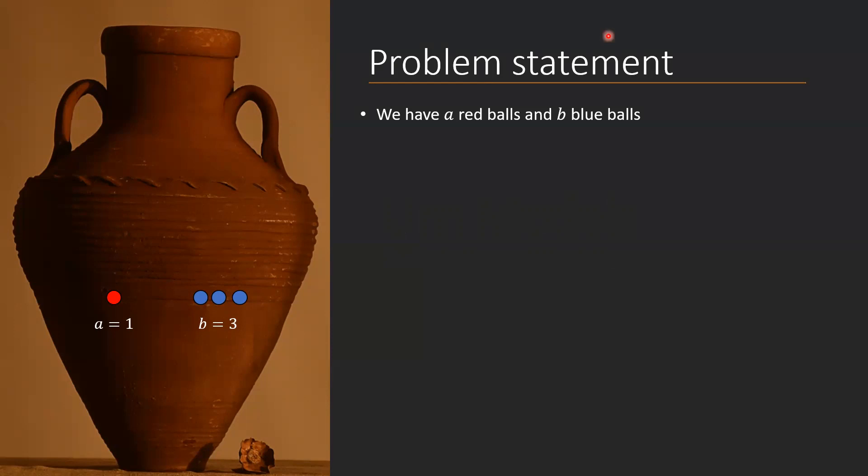For the sake of this video, we consider that you have two different colors of balls — red balls and blue balls. We introduce two variables: A, which is the number of red balls in the urn, and B, which is the number of blue balls. As you can see on the left, I have an example here of A equals 1 and B equals 3, which will be used throughout this video.